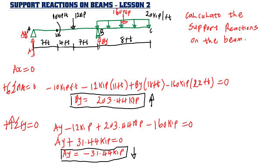In summary: Ax is zero because there is no horizontal force; By is 203.44 kip acting upward; and Ay is 31.44 kip acting downward. These are the support reactions required for this beam to be at equilibrium.